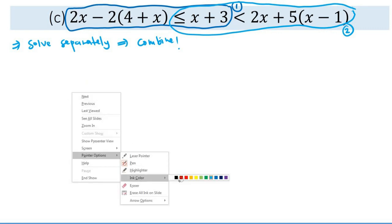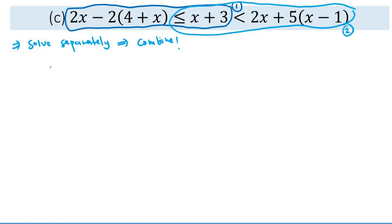Let's explore this carefully. First thing first, we would have 2x minus 2 times (4 + x) in the bracket, less than or equal to x plus 3. This is our first set of inequalities, so just solve this first. We would have 2x minus 8 minus 2x less than or equal to x plus 3.